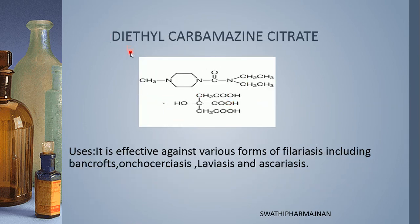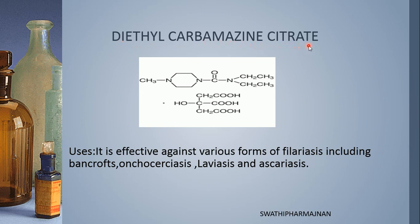The next structure under piperazine derivatives is diethylcarbamazine citrate. Two ethyl groups are present on the nitrogen, which is attached to a carbonyl group, along with a piperazine group and one methyl group. Diethylcarbamazine is combined with citrate to give the complete name diethylcarbamazine citrate. It is effective against various forms of filariasis including Bancroft's, Onchocerciasis, Loiasis, and Ascariasis.